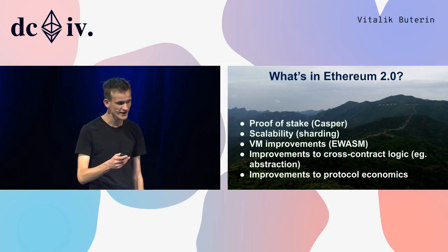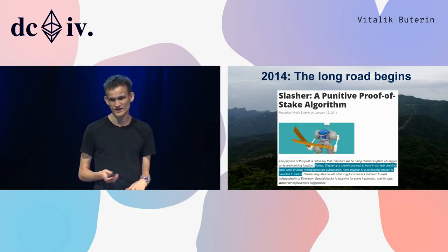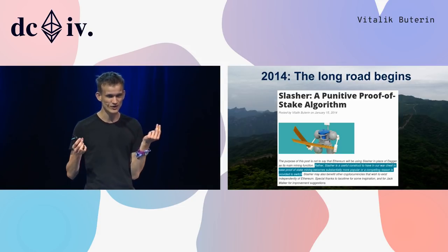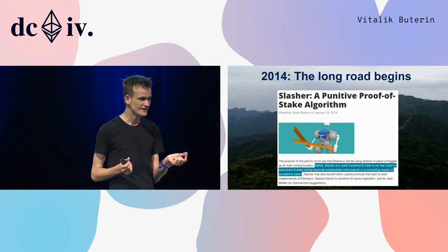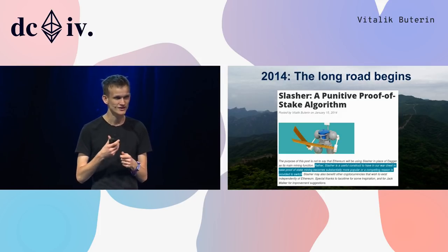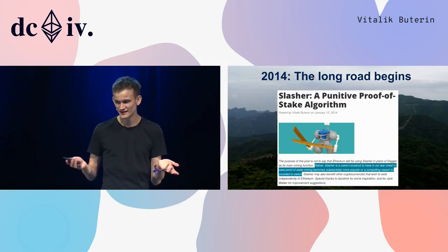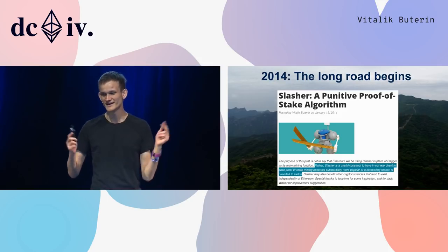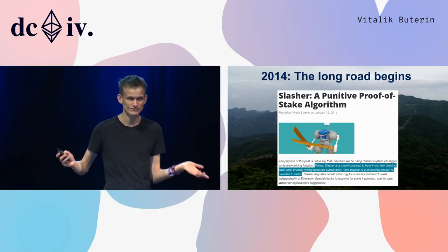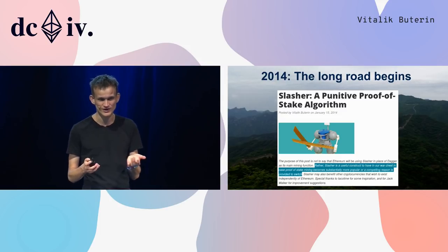The road to proof of stake actually started way back in 2014 with a blog post I published in January describing an algorithm called Slasher, which introduced the most basic concept in many proof of stake algorithms: the idea that if you get caught doing something wrong, this can be proven and you can be penalized for it, and how this can be used to increase security. At the time, I believed Slasher was 'a useful construct to have in our war chest in case proof of stake mining becomes substantially more popular,' but we weren't doing that yet.